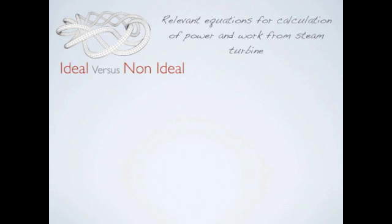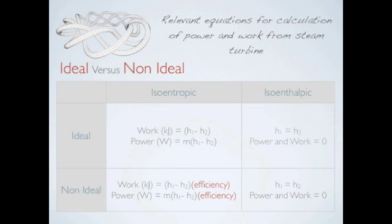We have to remember that in real-life situations, there is no such thing as 100% efficiency. As you can see from the table, for an isentropic system, the equations for ideal and non-ideal are similar. The only difference is that for non-ideal conditions, we have to multiply both power and work done equations with efficiency.